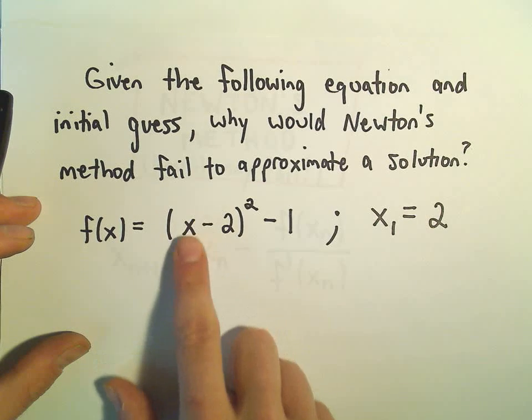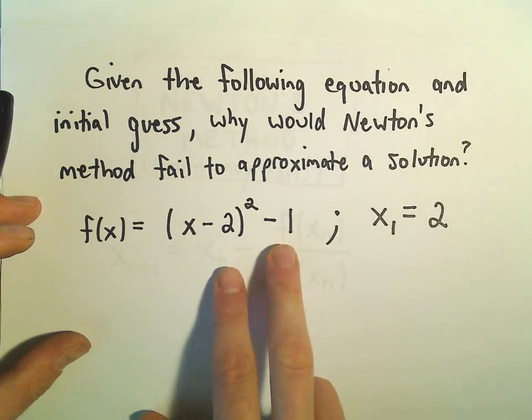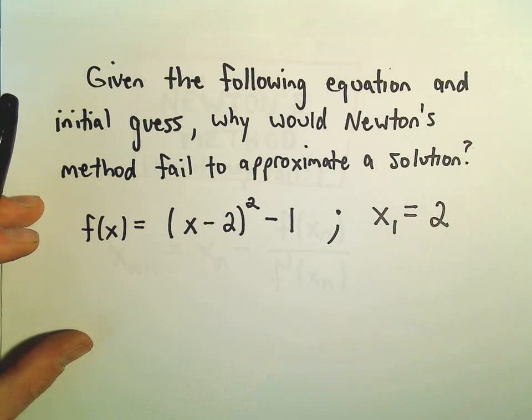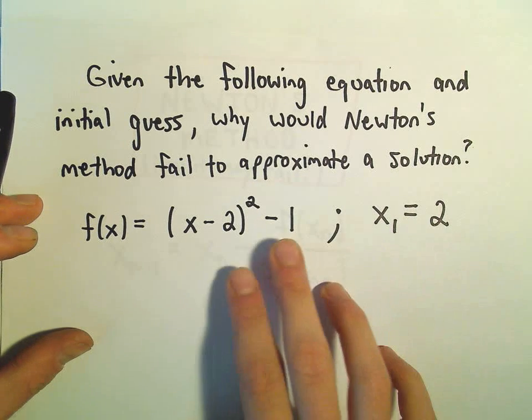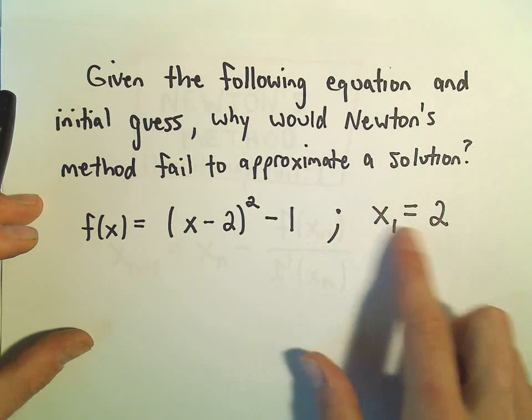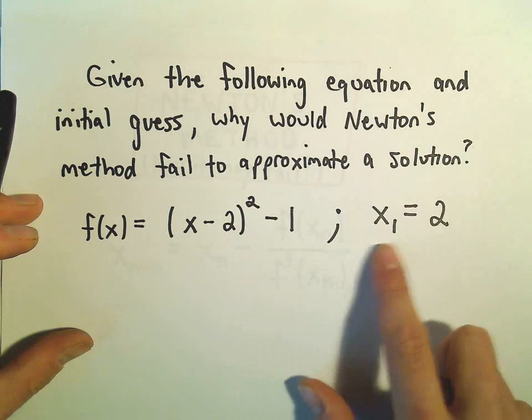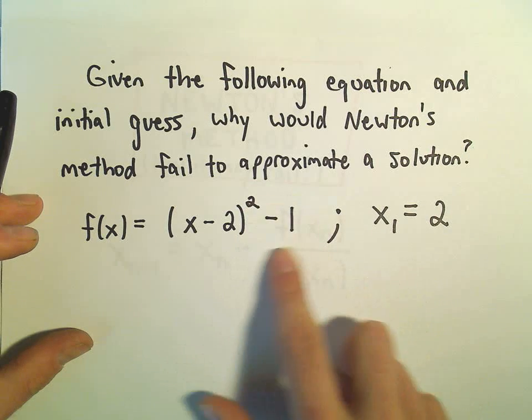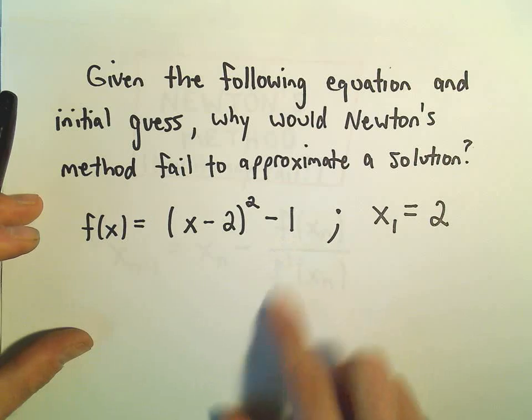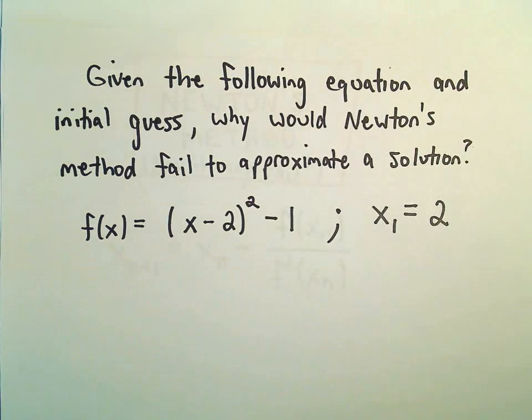If we plug 2 into this, we'll get 2 minus 2, we'll get 0 squared minus 1, we'll get negative 1. And in one of the other videos, negative 1 was actually kind of our starting point - we started with an initial guess and got negative 1 out. And that's close to 0 and we started using it and everything worked out great.